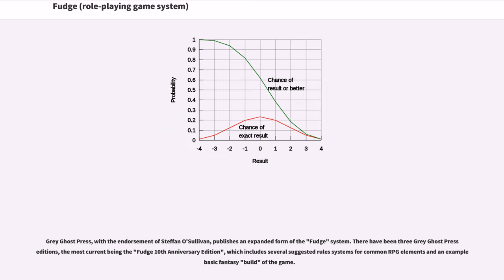Grey Ghost Press, with the endorsement of Stefan O'Sullivan, publishes an expanded form of the Fudge system. There have been three Grey Ghost Press editions, the most current being the Fudge 10th Anniversary Edition, which includes several suggested rules systems for common RPG elements and an example basic fantasy build of the game.